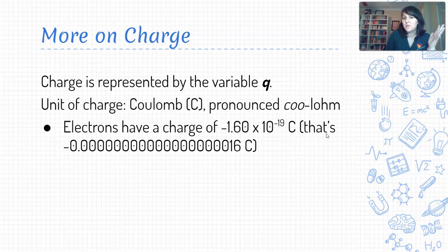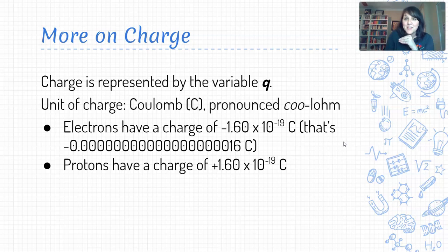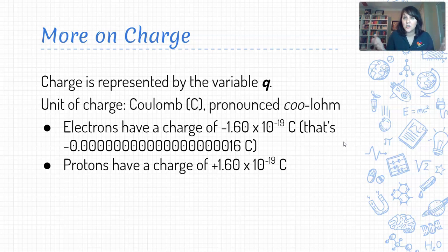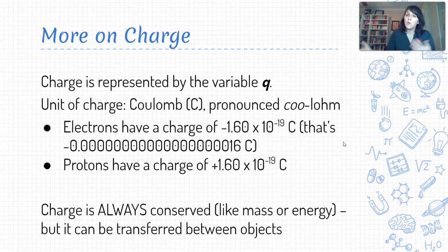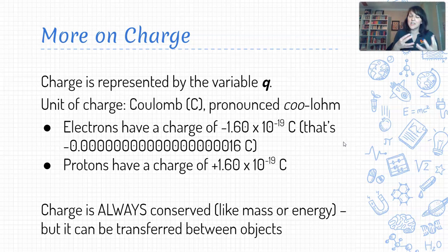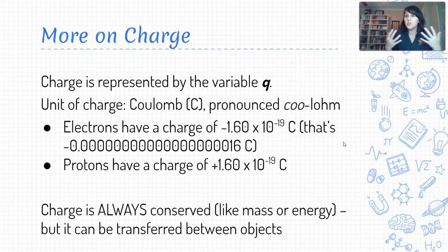If electrons have a charge of negative 1.6 times 10 to the negative 19 Coulombs, any guess how much charge a proton has? That's right — positive 1.6 times 10 to the negative 19 Coulombs. So electrons and protons have the same amount of charge, the same number of Coulombs, just electrons are negative and protons are positive.